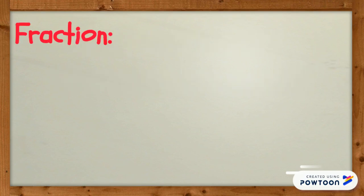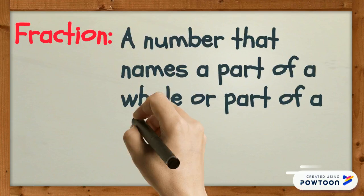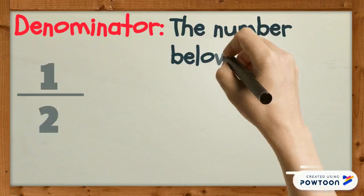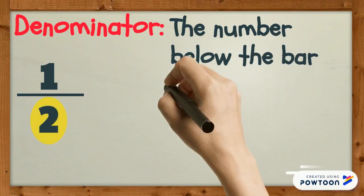A fraction is a number that names a part of a whole or a part of a group. Denominator is the number below the bar that tells us how many equal parts are in the whole or the group.